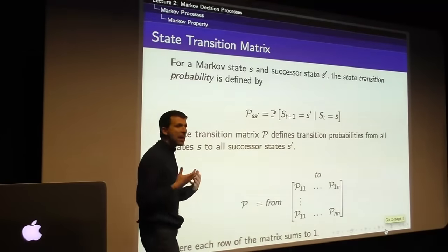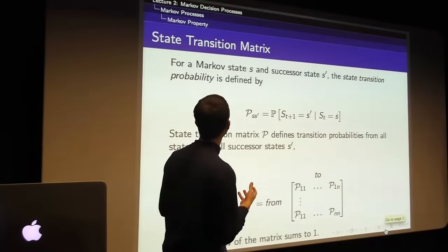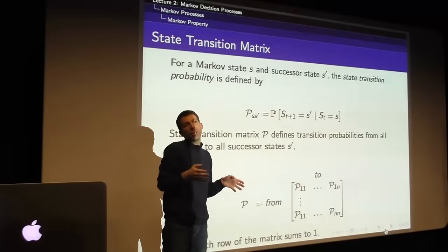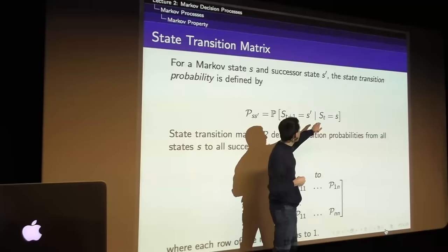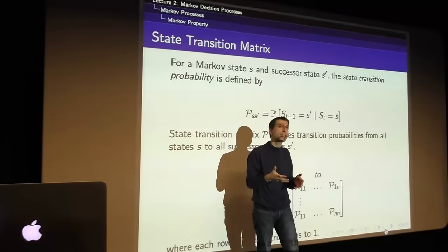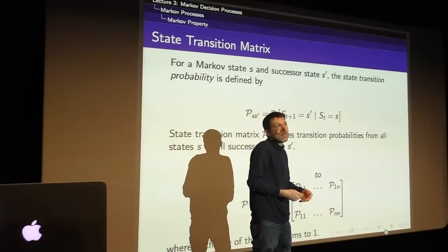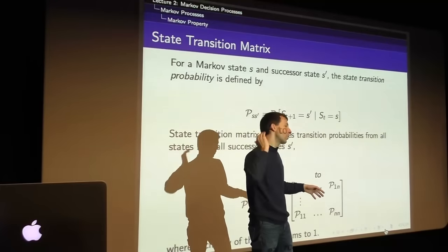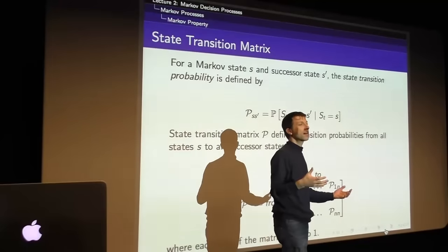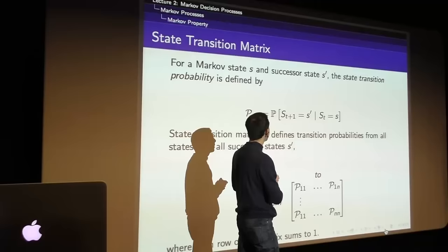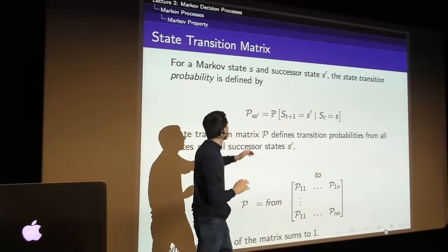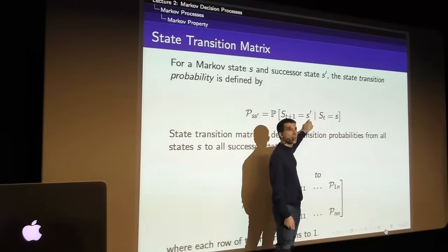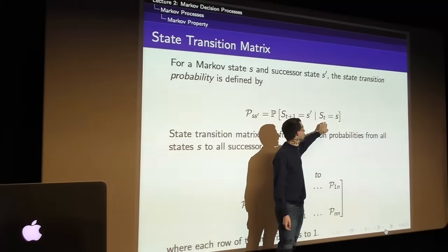For any Markov process, if you start in some state s with successor state s-prime, you can define the probability of transitioning from one state to the next. The state characterizes everything about what will happen next, so there's a well-defined transition probability: given that I was in state s, there's some probability I'll transition to some next state. This gives us our state transition probabilities — P(s-prime | s) — and we can form these into a complete transition matrix.